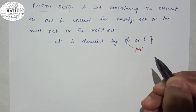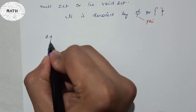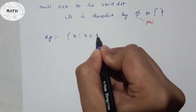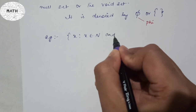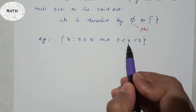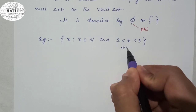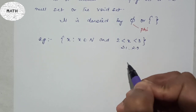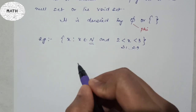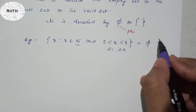Phi is spelled P-H-I. For example, if x belongs to natural numbers and 2 < x < 3, it means x lies between two and three. The number would be 2.1, 2.9, and so on — none of which are natural numbers. So the answer will be phi.